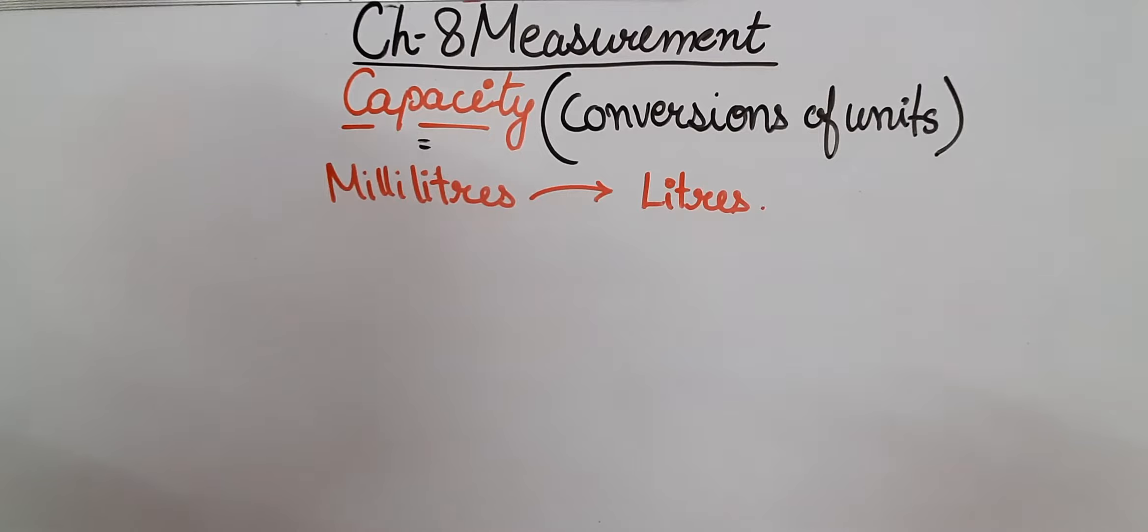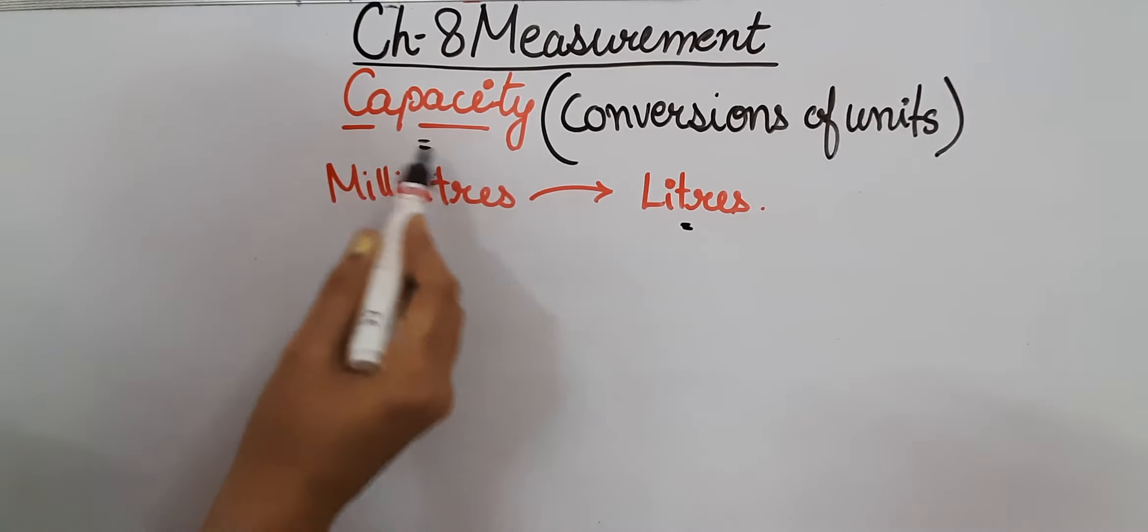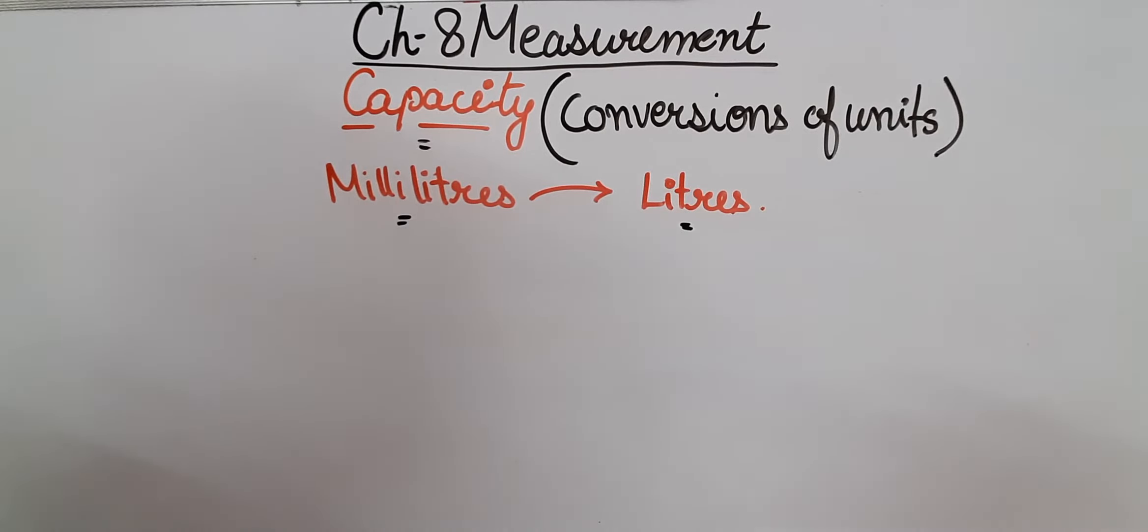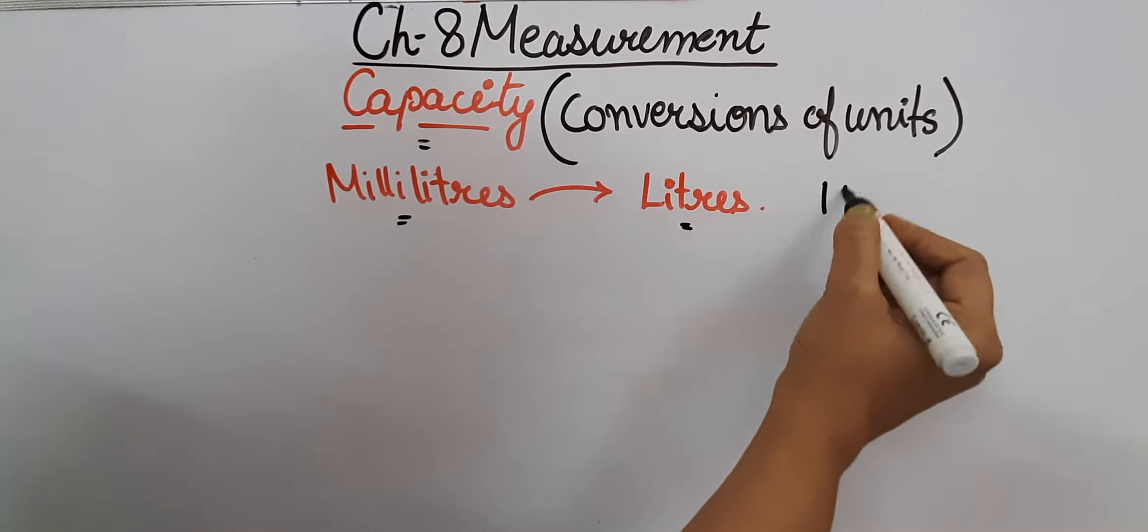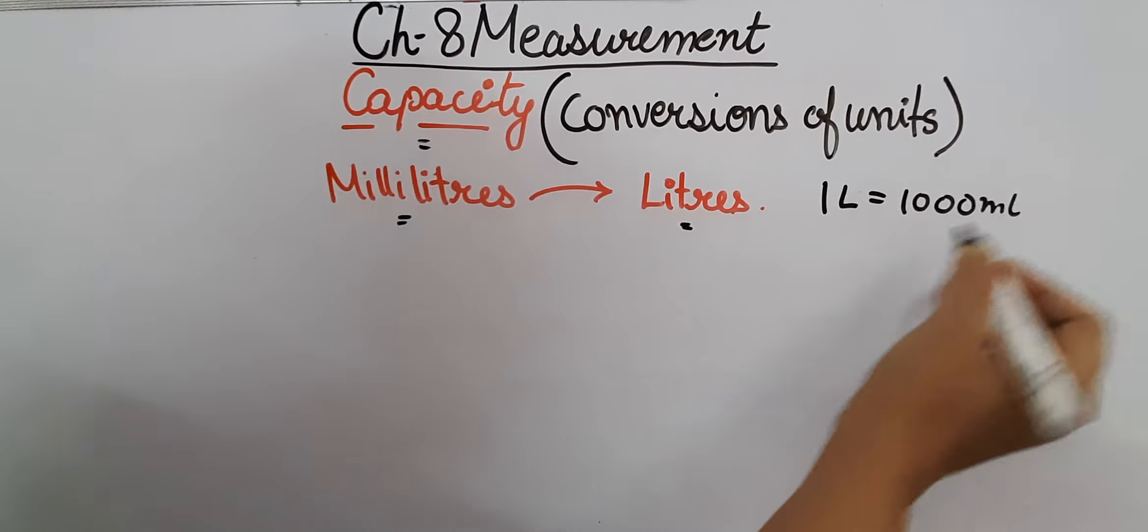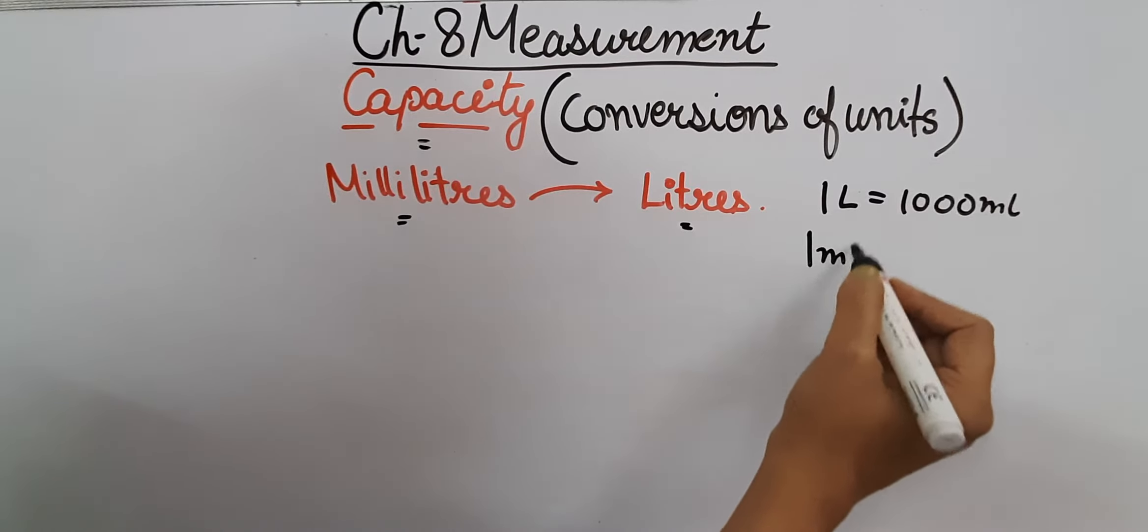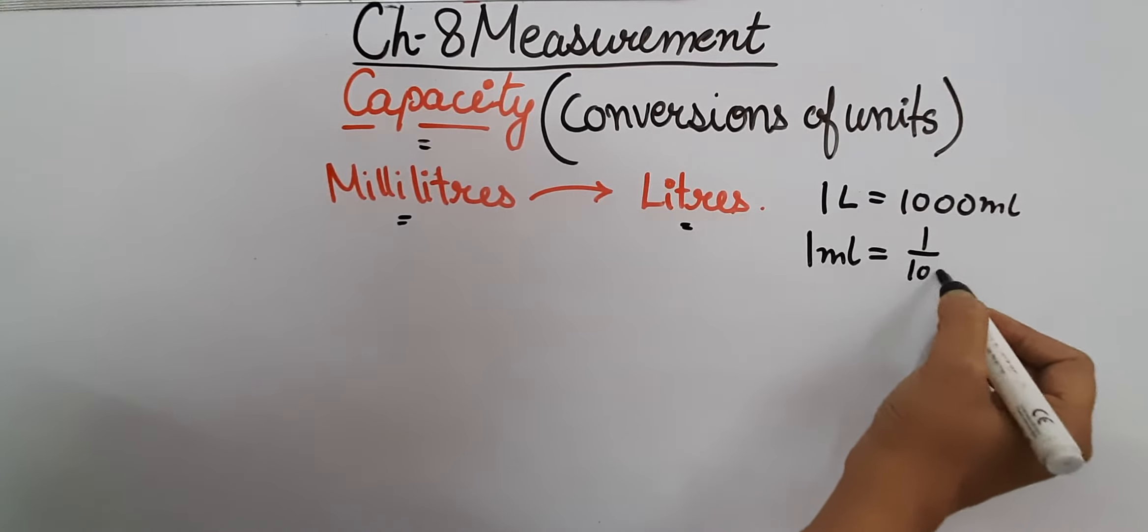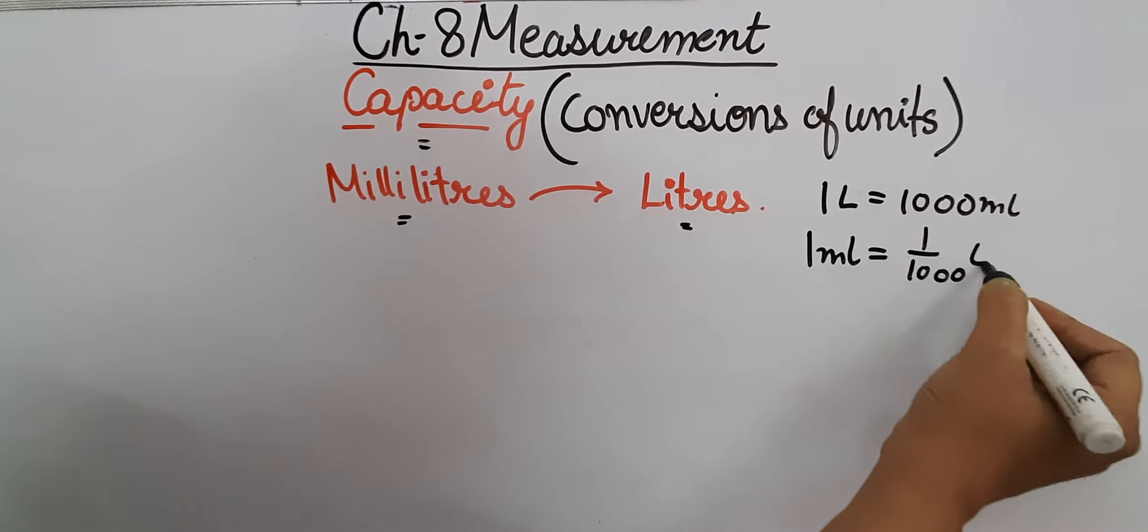Now we will convert milliliters into liters. We know that milliliter is the smaller unit and liter is the comparatively larger unit of measurement of capacity. Now as I have told you earlier, one liter equals 1000 milliliters and one milliliter equals one upon 1000 liters.